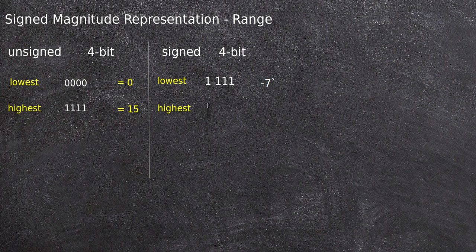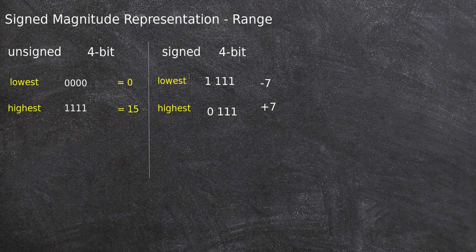For the highest number, the sign is positive, so the sign bit is 0. The highest magnitude is 111, that is equal to 7. So the highest number possible is plus 7. Therefore, in the case of signed magnitude representation using 4-bit representation, the range is minus 7 to plus 7.